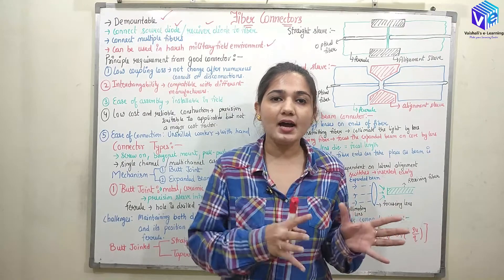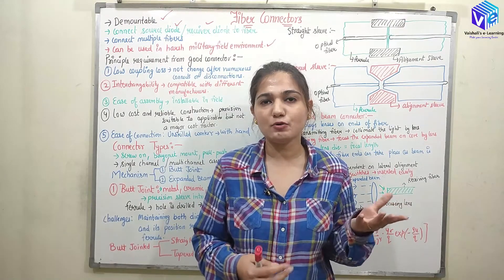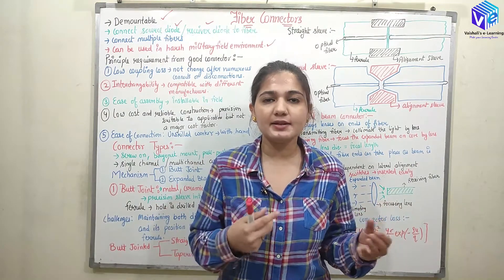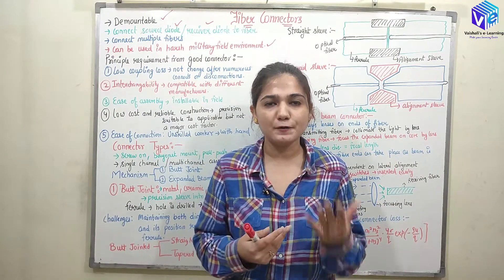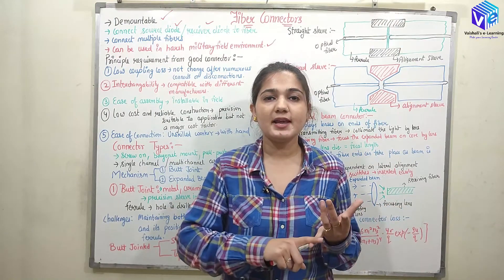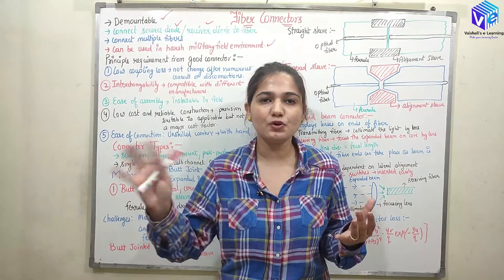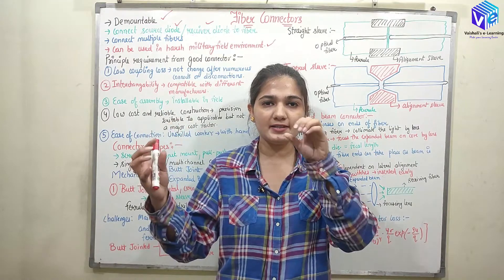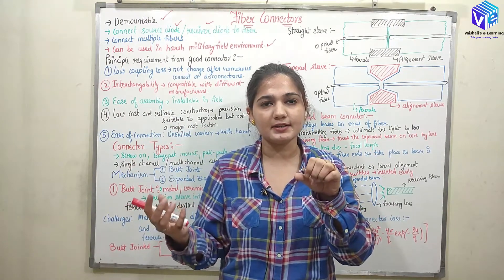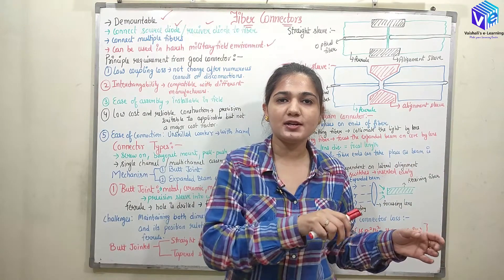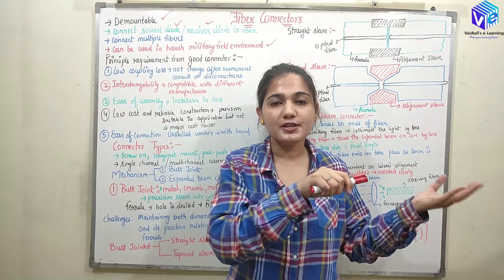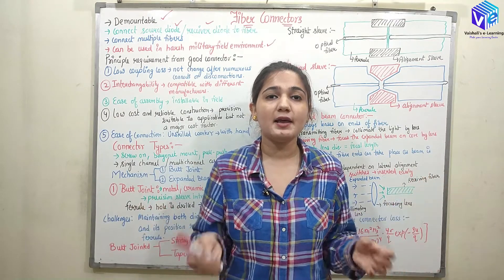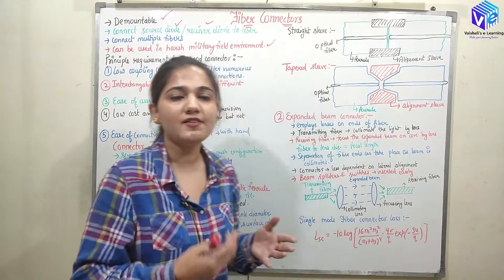Connectors are demountable connections — they make non-permanent connections which can be broken very easily. Connectors are used to make demountable connections, and they can also be used to make a connection from the source diode. At the source we have LEDs or lasers connected to the fibers, so connectors can link LEDs and lasers to the fiber. At the receiving end, connectors can also connect the fiber with the photodiodes.